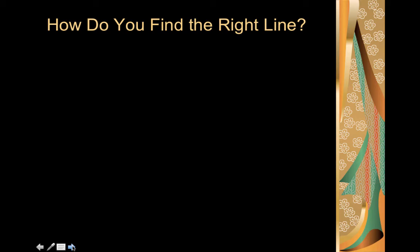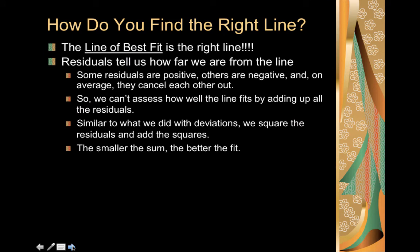So how do we find the right line? The line of best fit is going to be the right line. The residuals tell us how far we are from the line, how far each data value is from the line. Some residuals are going to be positive because our data values are above the line, and others are going to be negative because our data values are below the line. And on average they end up canceling each other out. However, we don't really like when things cancel out because then we can't assess how well they fit by just adding up all of the values.